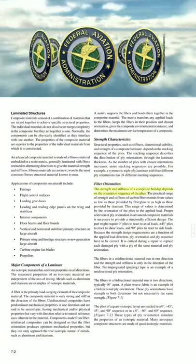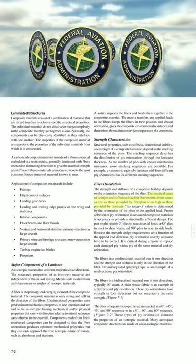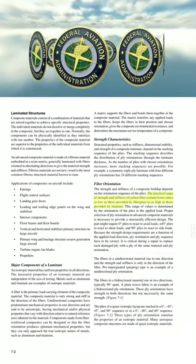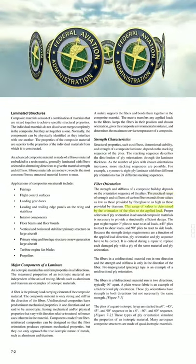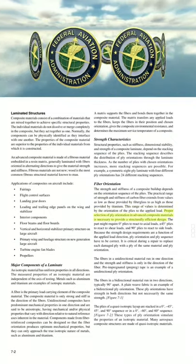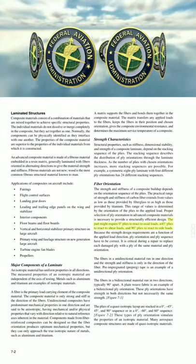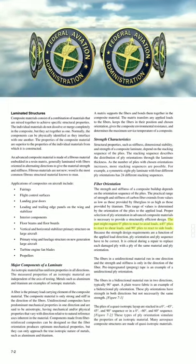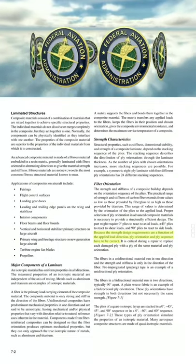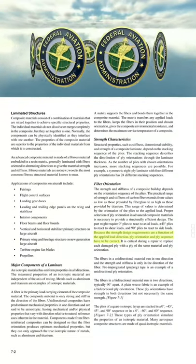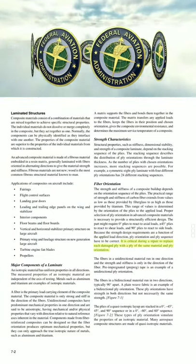Fiber orientation. The strength and stiffness of a composite build-up depends on the orientation sequence of the plies. The practical range of strength and stiffness of carbon fiber extends from values as low as those provided by fiberglass to as high as those provided by titanium. This range of values is determined by the orientation of the plies to the applied load. Proper selection of ply orientation is necessary to provide a structurally efficient design. The part might require 0-degree plies to react to axial loads, plus or minus 45-degree plies to react to shear loads, and 90-degree plies to react to side loads. It is critical during a repair to replace each damaged ply with a ply of the same material and ply orientation.